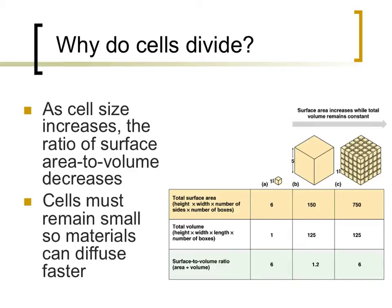If cells were too big, it would take too much time for diffusion of these nutrients to occur. To summarize this concept, the smaller a cell is, the larger the ratio of surface area to volume that a cell possesses. Examples of the math behind this concept are provided in the picture on the bottom right of this slide.